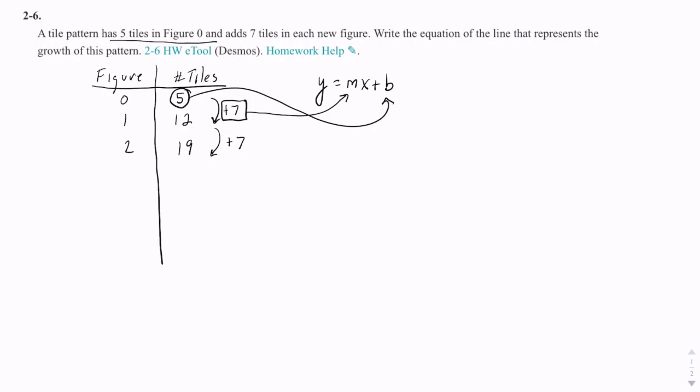So we could write the equation just by writing y equals m, which is the 7x, plus b, which is the 5. And there is the equation of the line that represents the growth of this pattern.